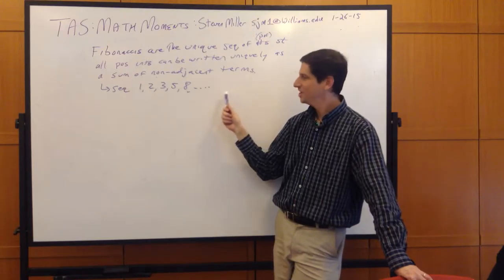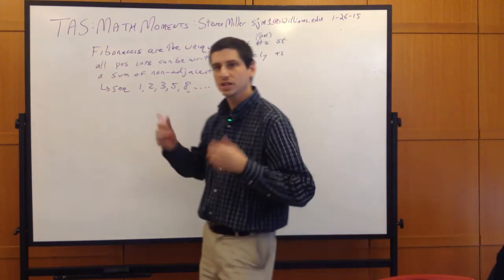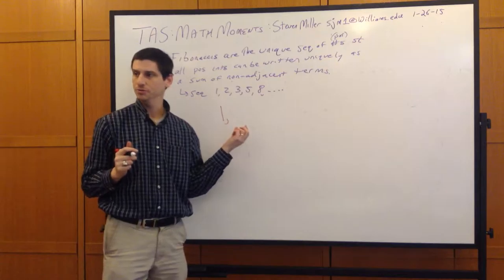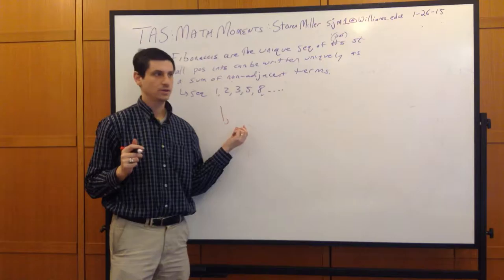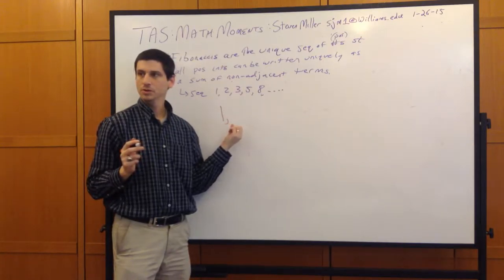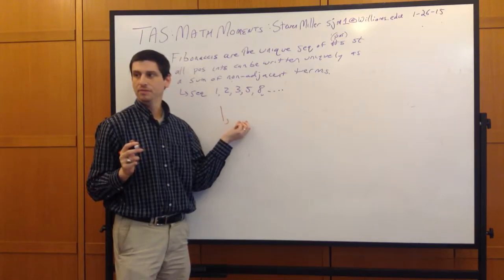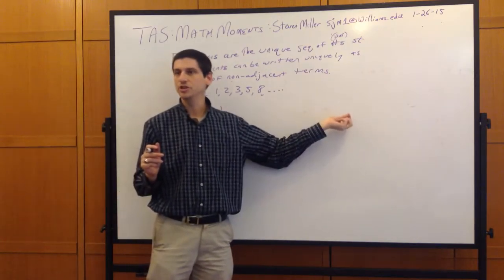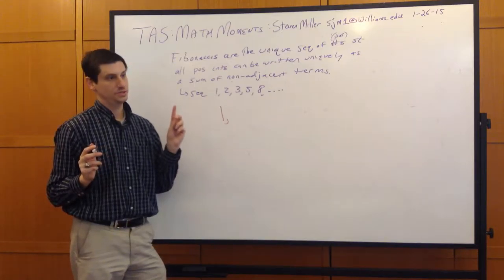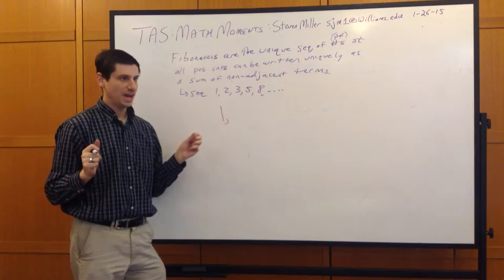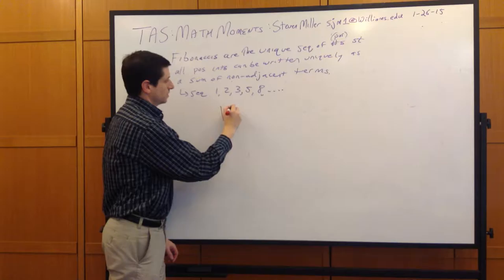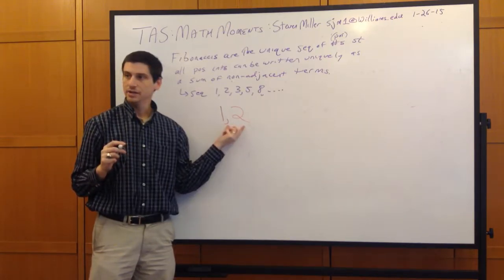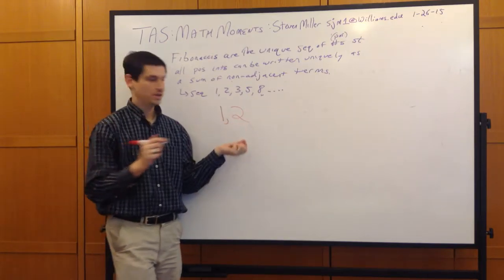Let's construct a sequence such that every positive integer can be written uniquely as a sum of non-adjacent terms. I start with 1. I need to add 2 because you can't get to 2 without it. Do I need to add 3? Yes — if I want to get 3, I can't do 1 plus 2 because they're adjacent. So I add 3. What about 4? 3 plus 1 works. Can I get 5? No — 3 and 2 are adjacent, so I add 5.